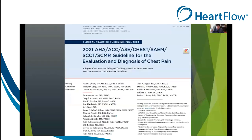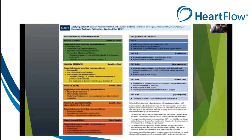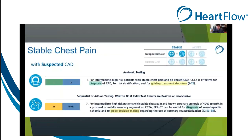These are the 2021 AHA-ACC chest pain guidelines, released largely in response to growing data on coronary CTA. When the ACC and AHA release recommendations, Class 1 is the strongest level and Level A is the highest level of evidence. Coronary CTA was the only non-invasive test to receive a Class 1A recommendation for the diagnosis of coronary artery disease, and FFRCT received a Class 2A indication to guide decision-making for managing coronary artery disease.